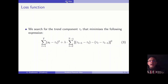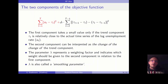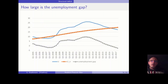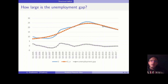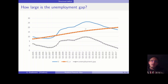When it comes to the HP filter, we have to search for a trend component tau that minimizes the following expression. This looks very complicated, but let's try to disentangle it. The expression has two components. The first component, highlighted in red, takes a relatively small value only if the trend component tau is relatively close to the actual time series of the log unemployment rate. The first component of the loss function will be relatively small when tau tracks the data closely, and larger when it does not.